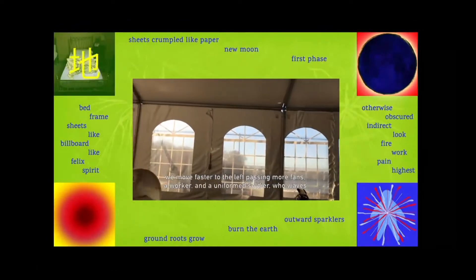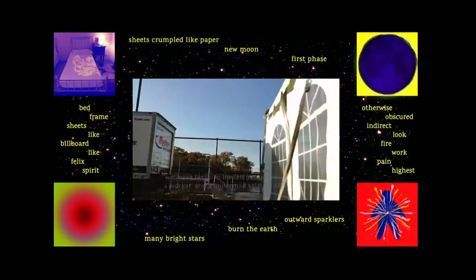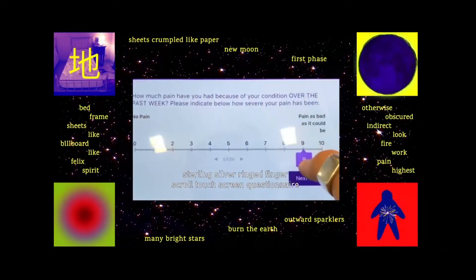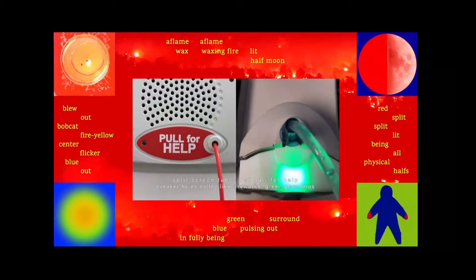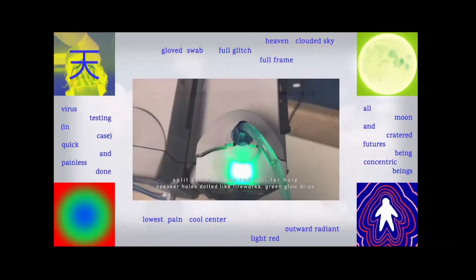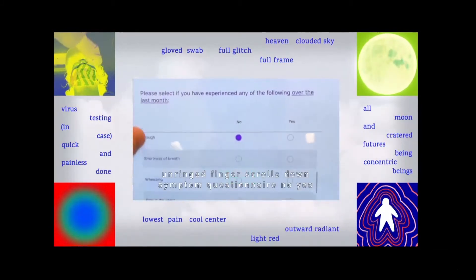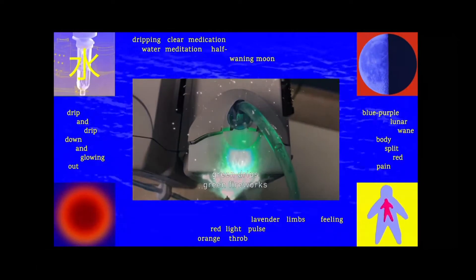We move faster to the left, passing more fans, a worker and a uniform soldier who waves. Sterling silver, ringed finger, scroll touch screen, questionnaire. How much pain, how severe. Splits green tubes, red. Pull for help. Speaker holes dotted like fireworks, green glow, drips. Unringed finger scrolls down, symptom questionnaire, no, yes. Green drips, green fireworks.